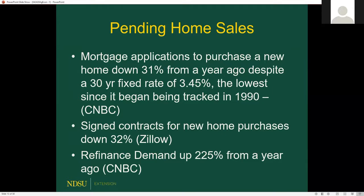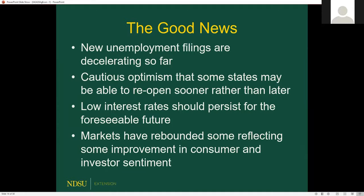Some good news: new unemployment filings are decelerating — still astronomically high, but at least not increasing. The number of people on continuing claims is lower than total initial filings, meaning some folks found jobs. Low interest rates should persist for the foreseeable future — I cannot imagine rates moving upward in the next two or three quarters, and probably longer as recovery will take time. Markets have rebounded from lows a few weeks ago, and consumer sentiment, while not great, is better than six to eight years ago.